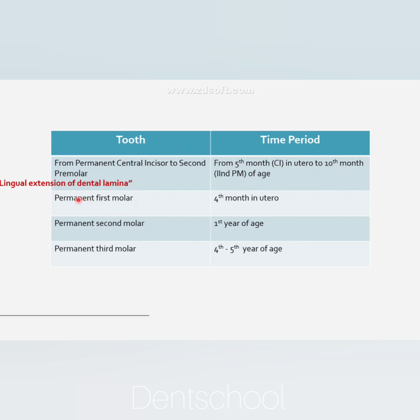The non-succedaneous teeth develop from the distal extension of the dental lamina. The first molar starts developing in the fourth month in utero, the second molar in the first year of age, and the third molar between the fourth and fifth year of age.